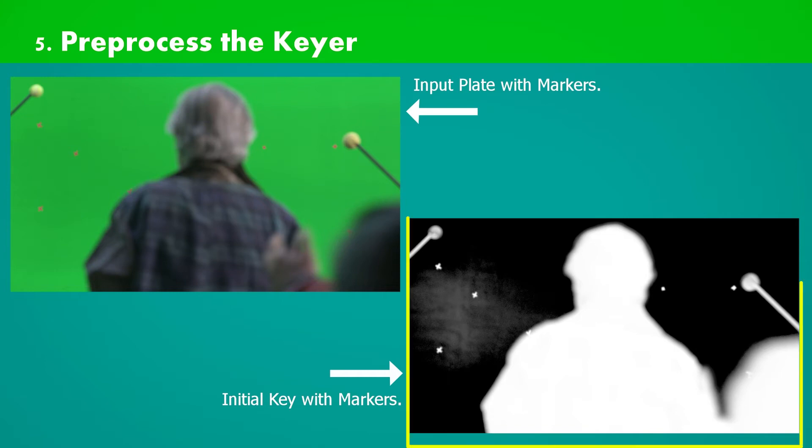In this plate some markers are at distance and some are near. When we start to key out with markers, our key looks like this. We surely don't want to keep these markers with our key.